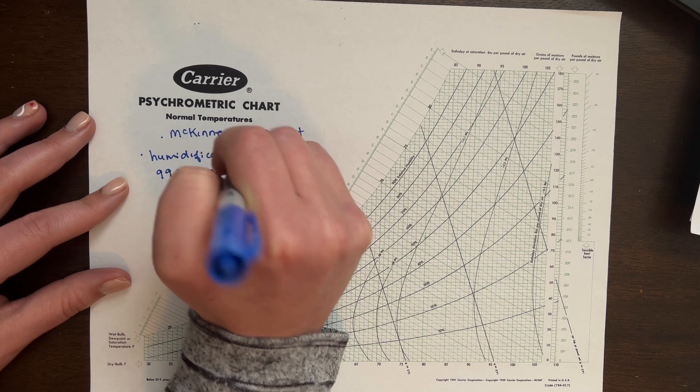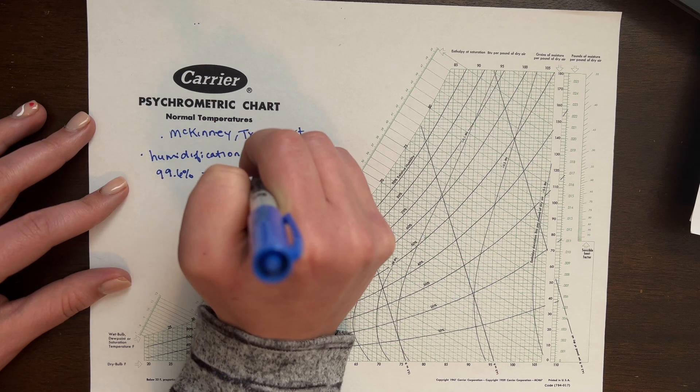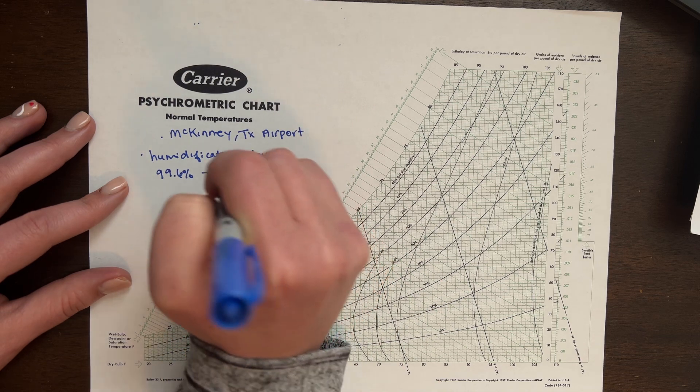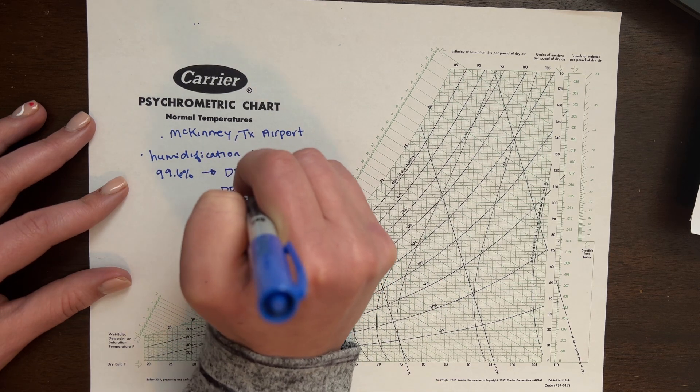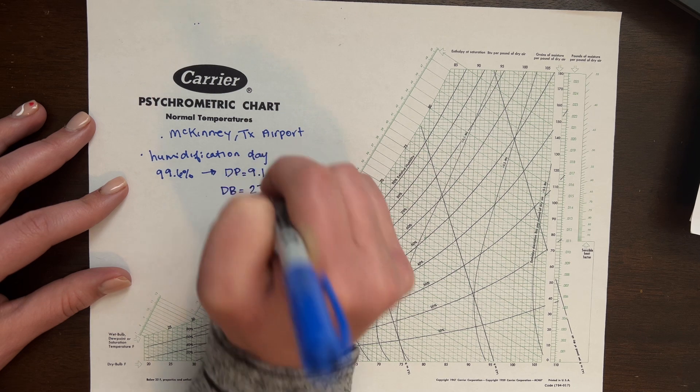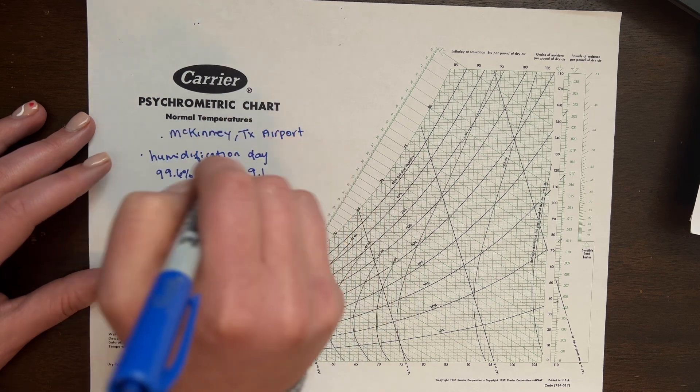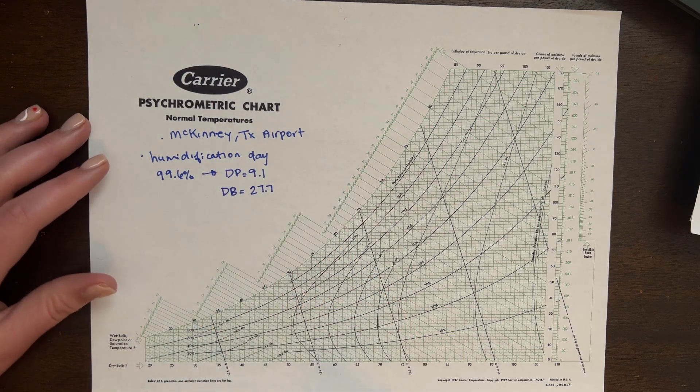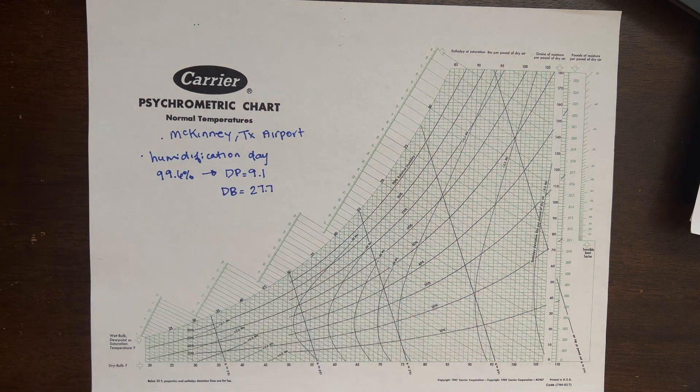And that gives us a dew point of 9.1, and it also gives us a dry bulb temperature of 27.7. Again, I got this from ASHRAE. You can get it from the 2021 ASHRAE Handbook Fundamentals. Okay, so then what does this information give us?